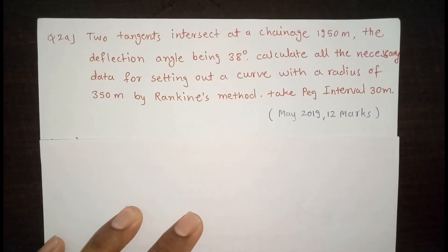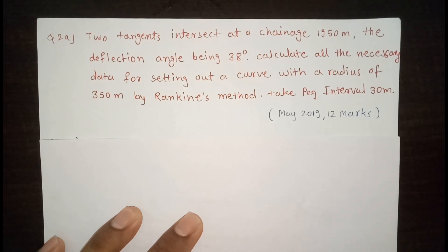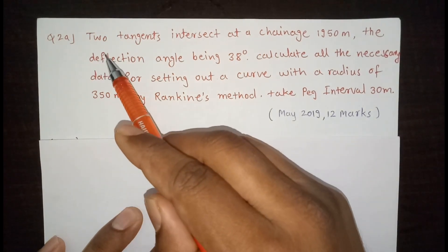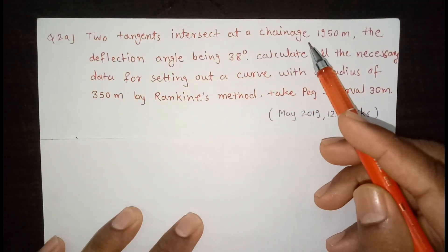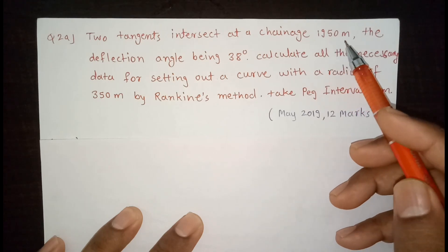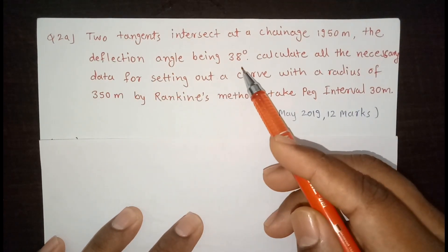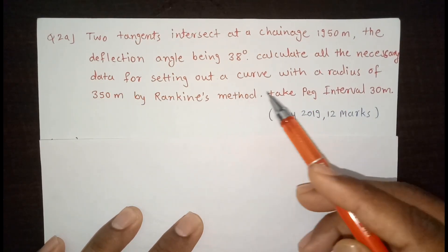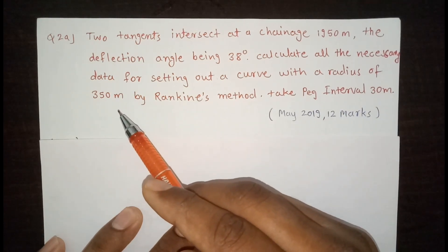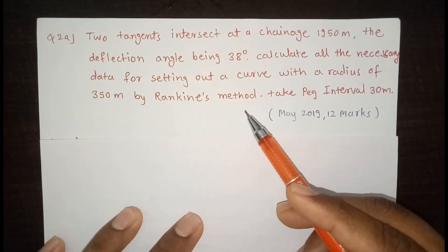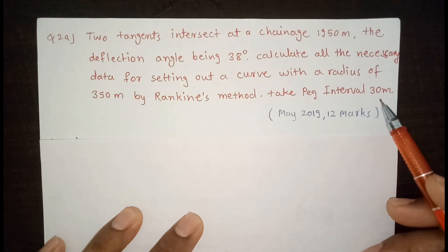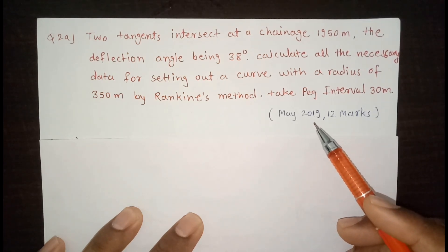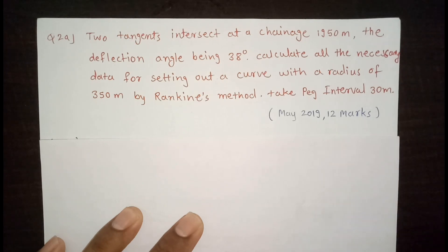Hello friends, today we will see a numerical on Rankine's method. Rankine's method is also called the deflection angle method. This is the first numerical: two tangents intersect at a chainage of 1950 meters, the deflection angle being 38 degrees. Calculate all the necessary data for setting out a curve with a radius of 350 meters by Rankine's method. Take peg interval 30 meters. This question was asked in May 2019 for 12 marks in Mumbai University examination.